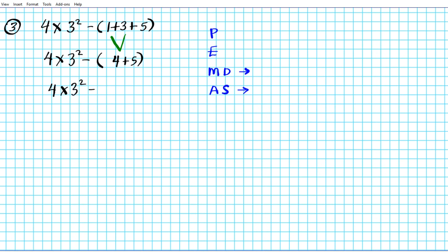Continuing with the parenthesis — we still keep it because we haven't simplified it to one number yet. So we have 4 times 3 squared, minus, and 4 plus 5 is the last addition in the parenthesis — 4 plus 5 is 9. We drop the parenthesis since it's been simplified. Now we have multiplication, exponentiation, and subtraction. We're going to deal with the exponents next: 3 squared is 3 times 3, which is 9. So we have 4 times 9 minus 9.